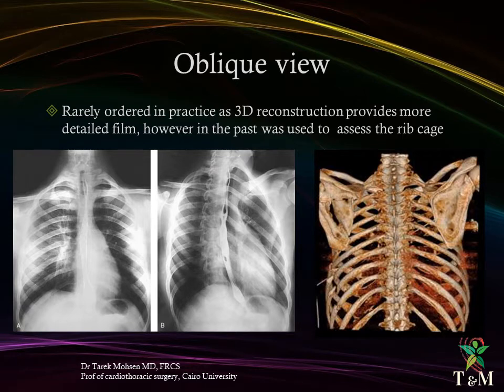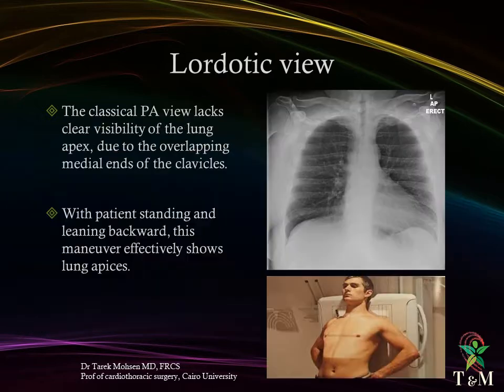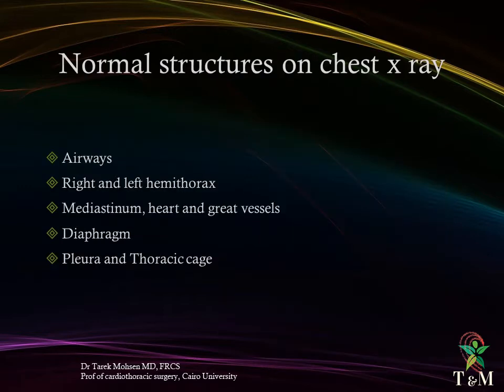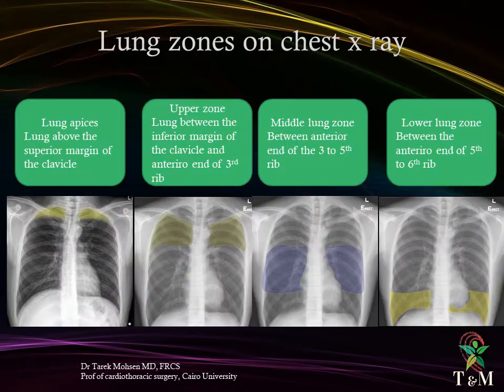The oblique view is rarely ordered in practice nowadays, as three-dimensional reconstruction provides more detailed imaging. However, in the past it was used to assess the rib cage. The laudatic view: the classical PA view lacks clear visibility of the lung apex due to the overlapping of the clavicles. With the patient standing and leaning backwards, this maneuver effectively shows the lung apices.